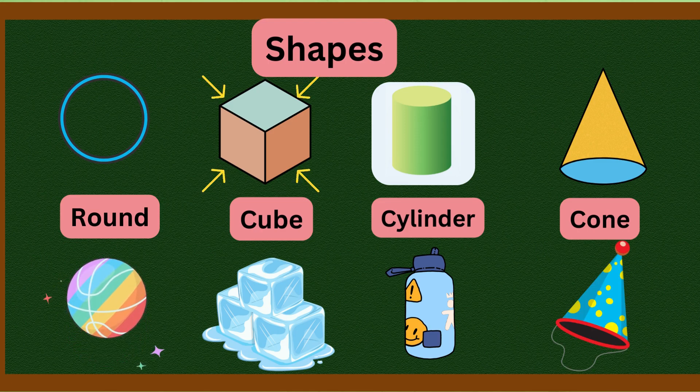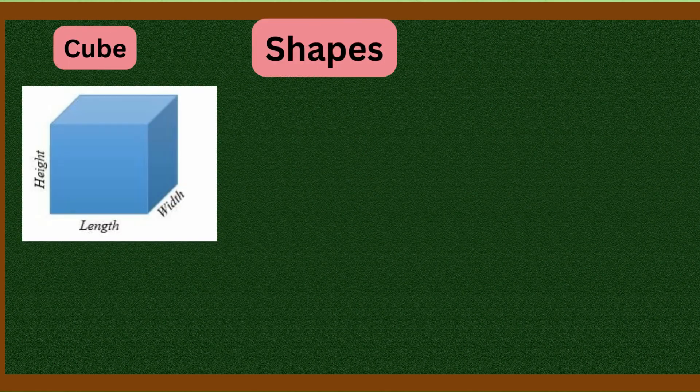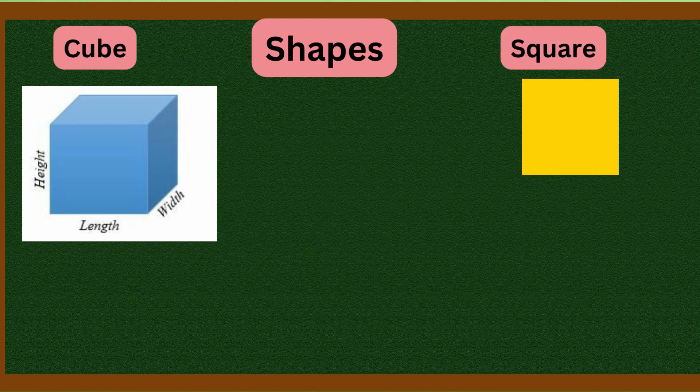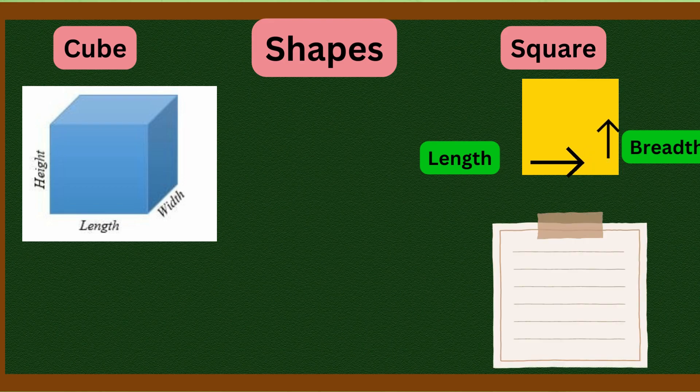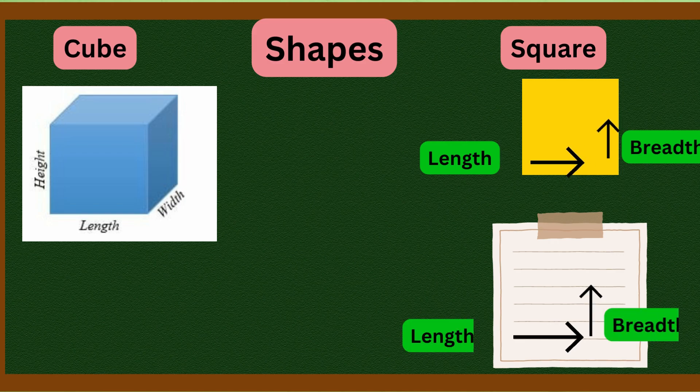Now we will understand some important things. Two shapes will look same to you. First is cube and second is square. You may say both are the same, but no. See, square has only length and breadth. Its example would be a paper sheet. If you take a square-shaped paper whose length and breadth are equal, that is a square. Cube has length, breadth, and height - all three. So this is the difference between cube and square.